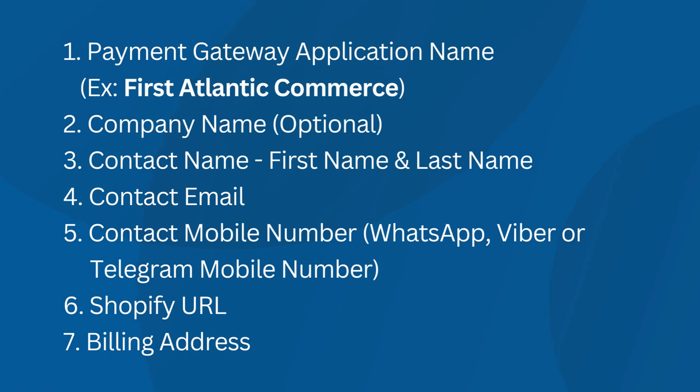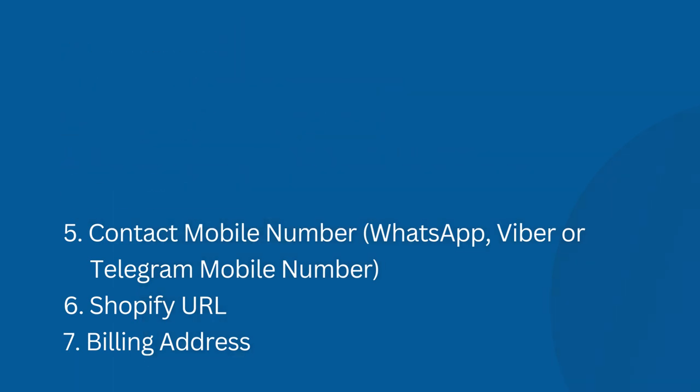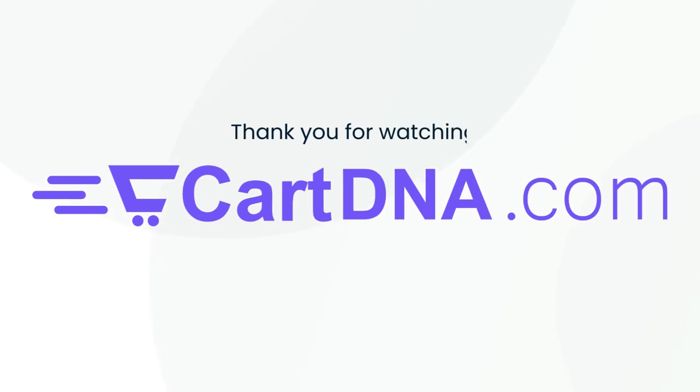2. Company name (optional). 3. Contact name — first name and last name. 4. Contact email. 5. Contact mobile number — WhatsApp, Viber, or Telegram mobile number. 6. Shopify URL. 7. Billing address. Thank you for watching.